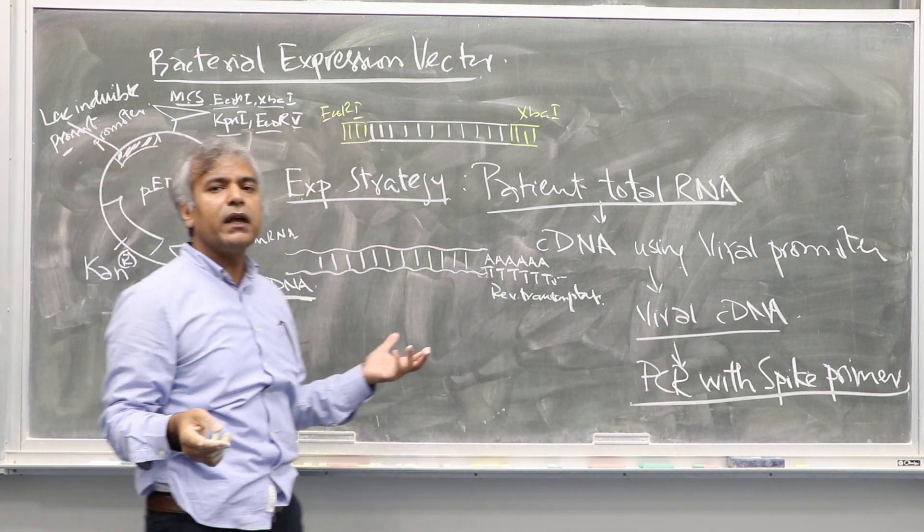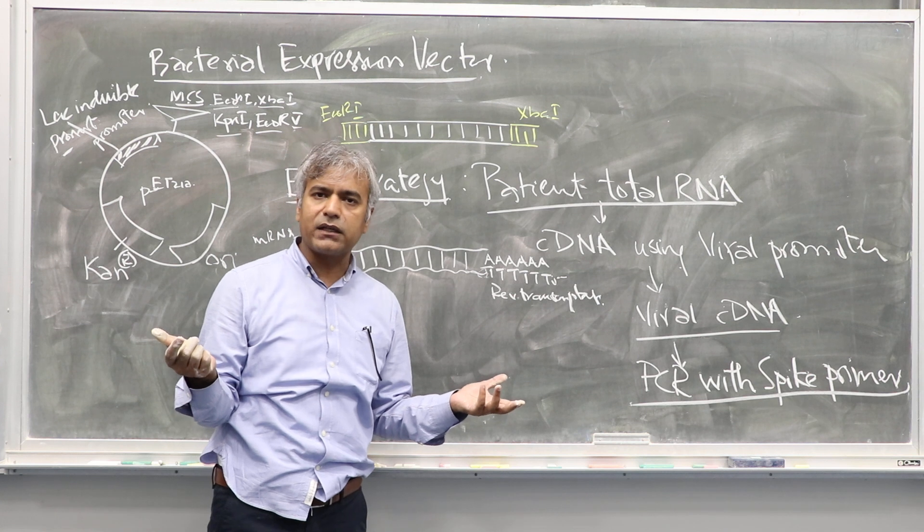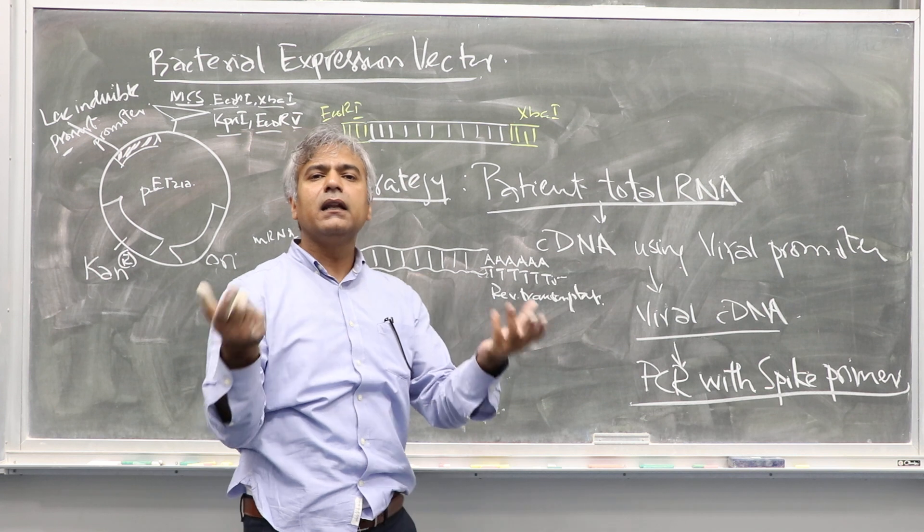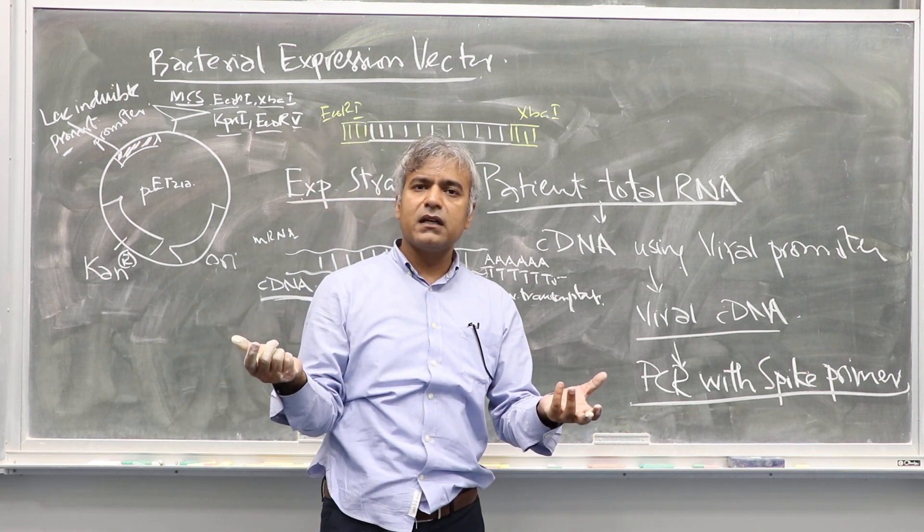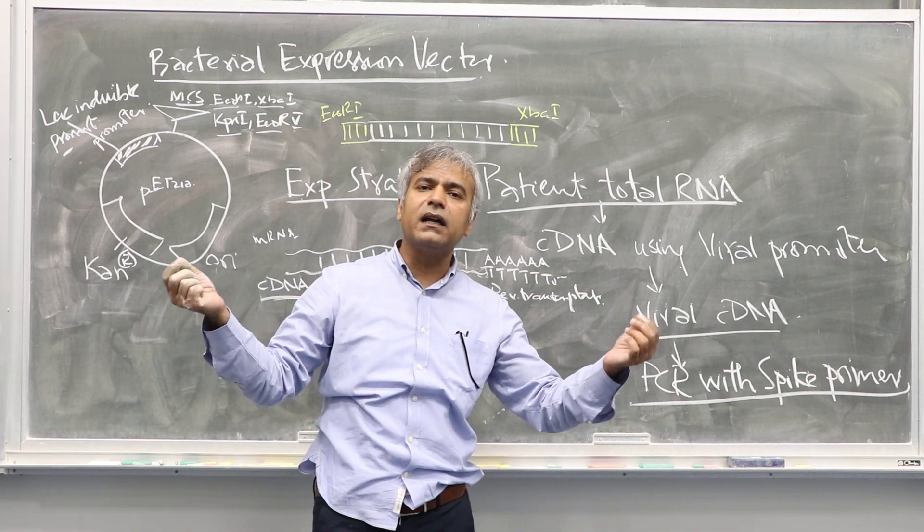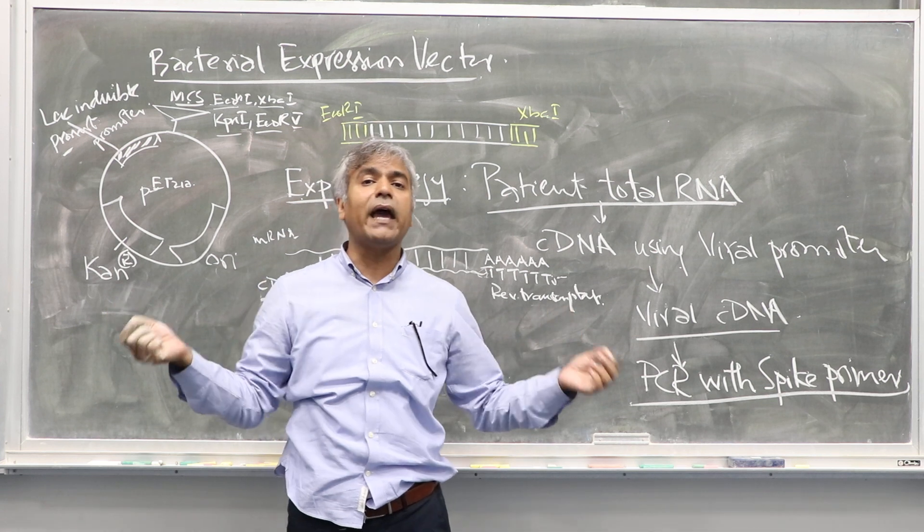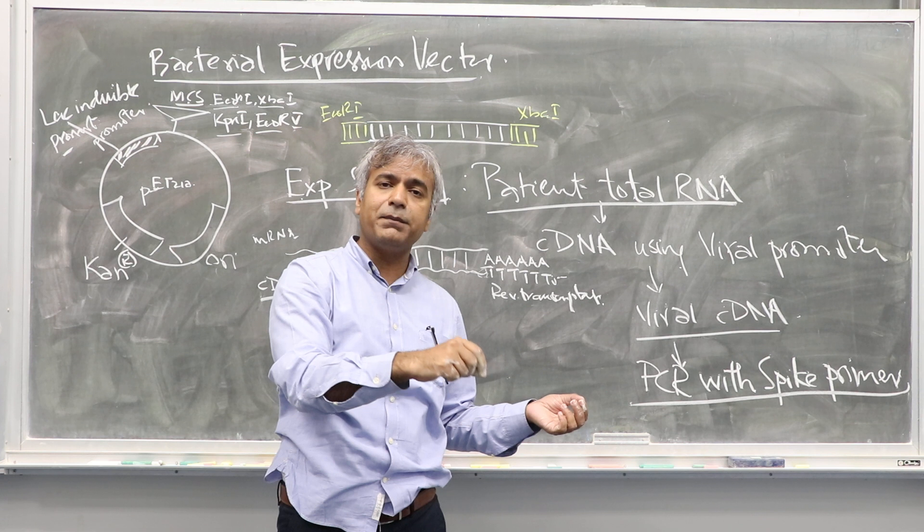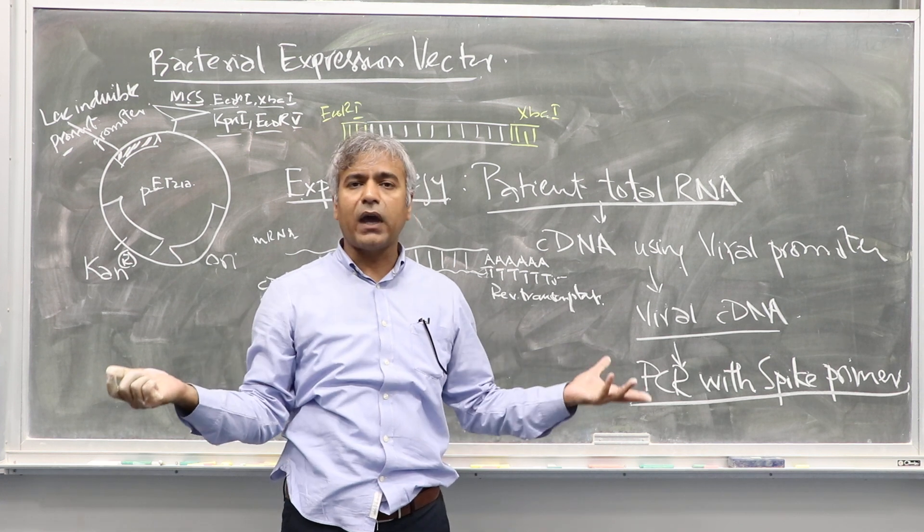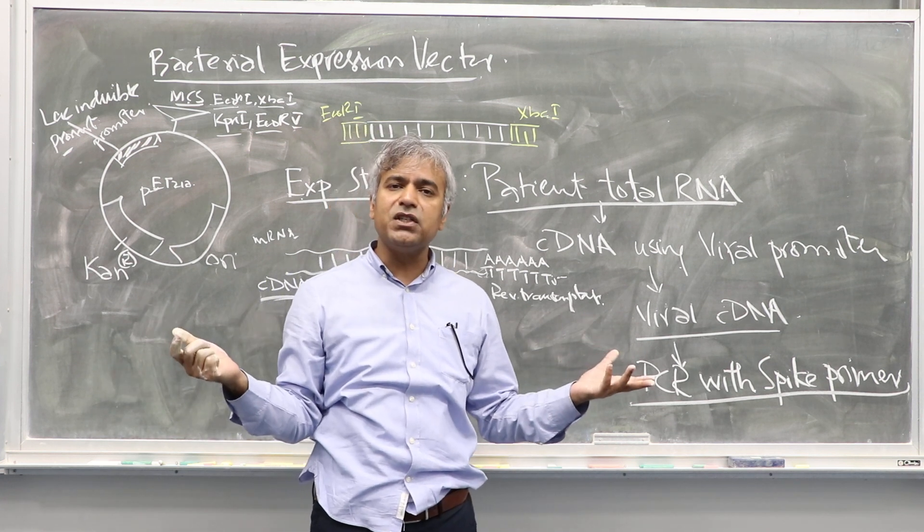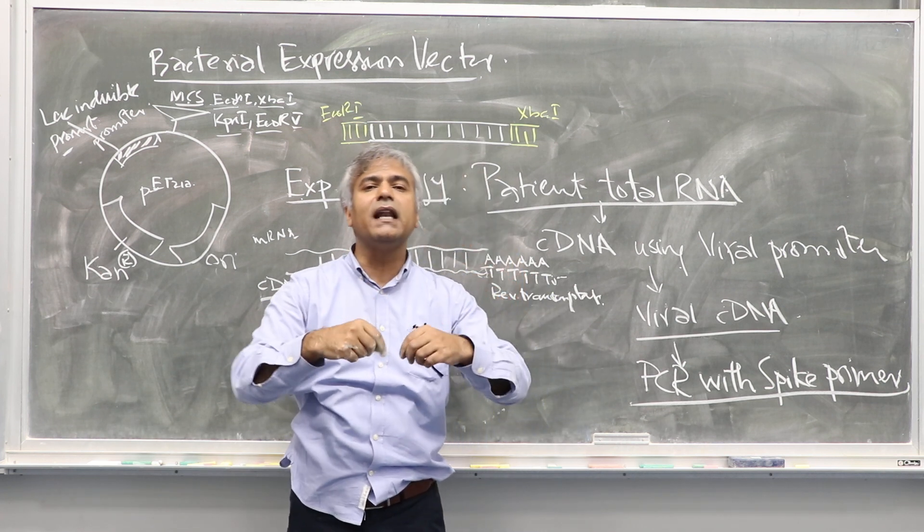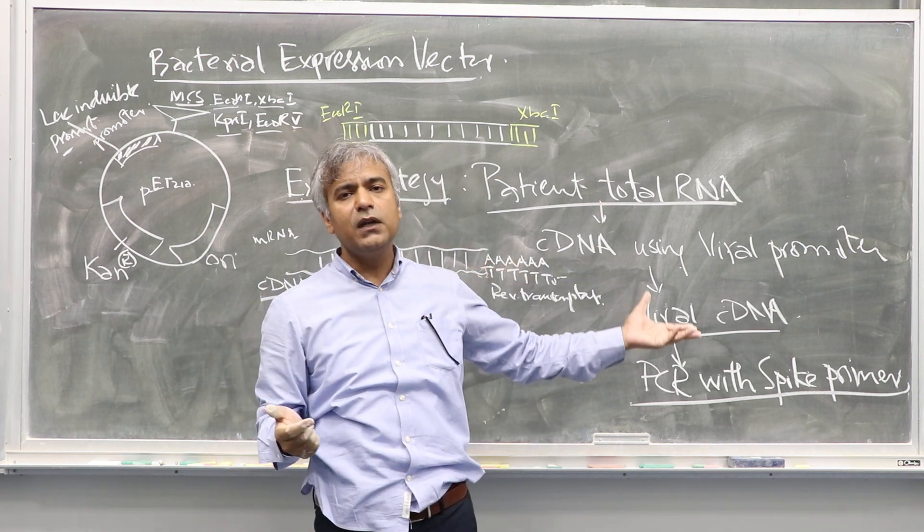Once we have it in the general purpose cloning vector, we can then sequence it. Sequencing tells us there's no error during the process of cDNA synthesis and then followed by PCR, so you have a perfectly normal spike gene. From the general purpose cloning vector, you then lift your gene and go into the bacterial expression vector.